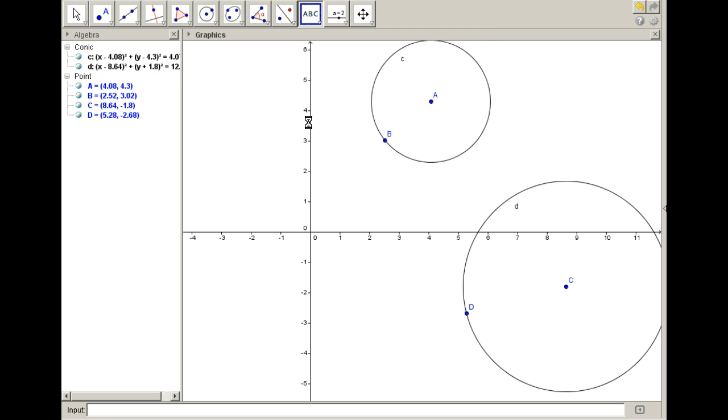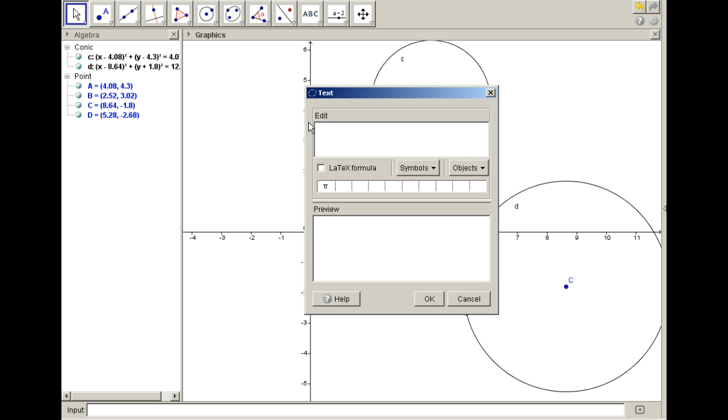So a circle is defined as the set of points that are equidistant to a center point. So in order to define one, a circle needs the distance defined, which is the radius, so that we know that everything is equidistant.